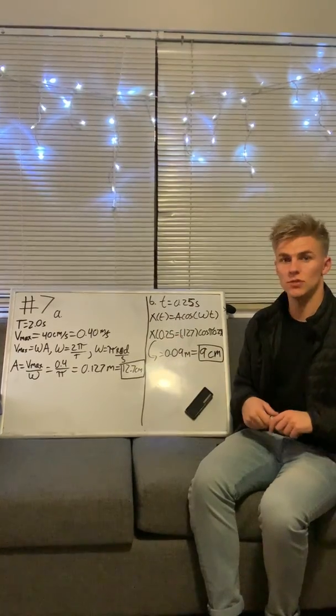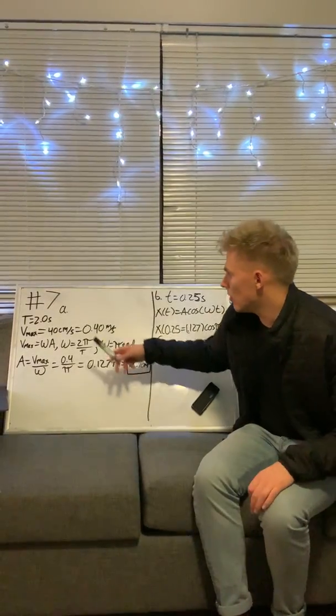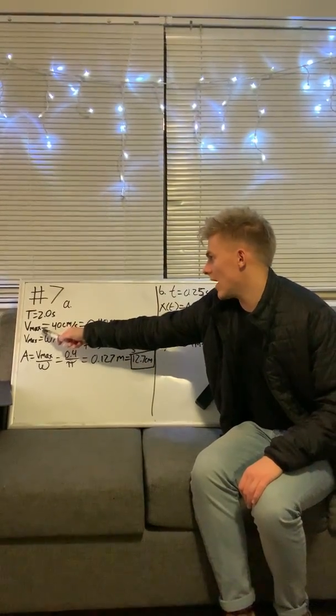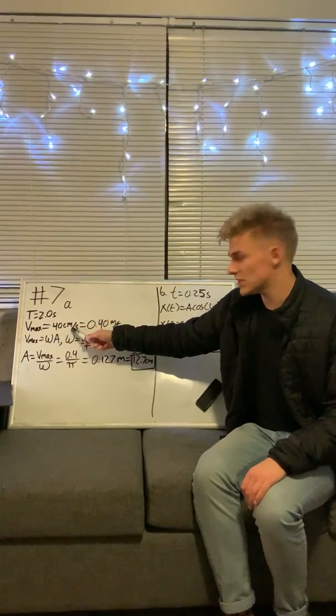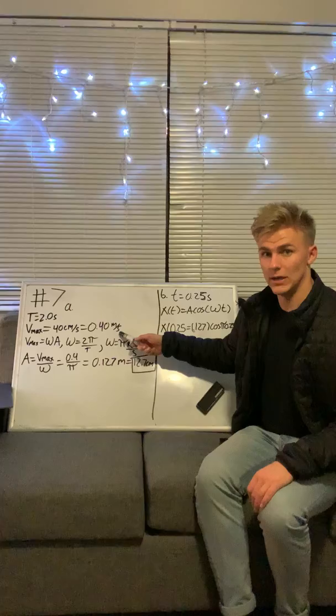Part A asks us what the amplitude of the oscillation is. We know that our period equals 2.0 seconds, and V max equals 40 centimeters per second, or 0.4 meters per second.